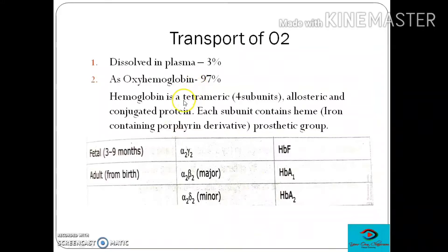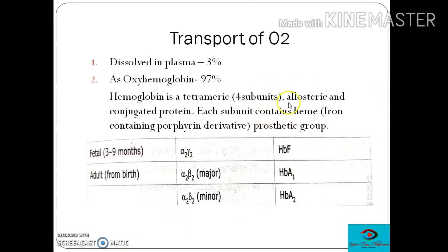Now we will look at the transport of oxygen. Oxygen is transported in two different ways: dissolved in plasma and, since oxygen's solubility in water — the basic component of plasma — is very low, only 3% is transported this way. The remaining 97% is transported as oxyhemoglobin by binding with hemoglobin. Hemoglobin is a tetrameric protein with four subunits; it is a conjugated protein — a conjugate of heme and globin — and it undergoes allosteric modulation. Each subunit contains heme, which is an iron-containing porphyrin derivative.